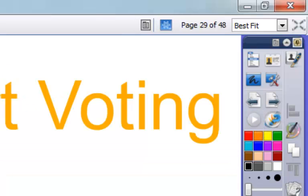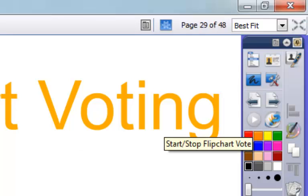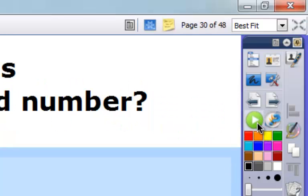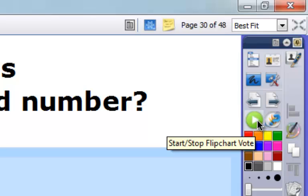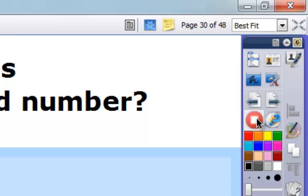You'll see that if I click on this page, that green button is inactive, so now I know that this is a page with a question on it. So I'm going to click on that to start the flipchart questioning or the flipchart voting.